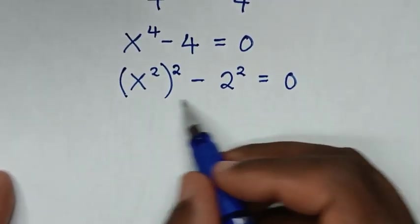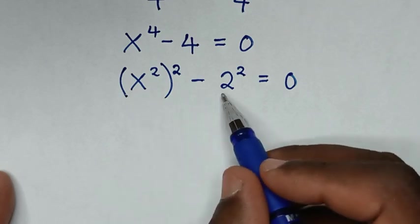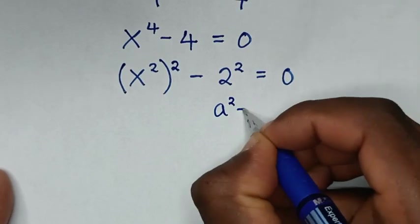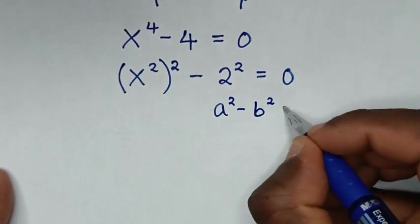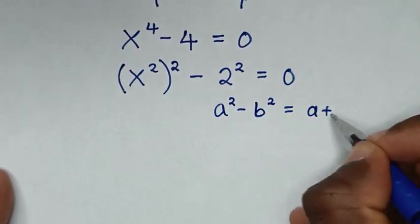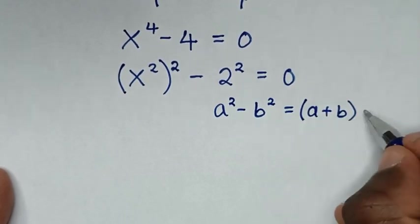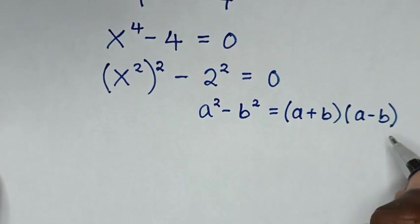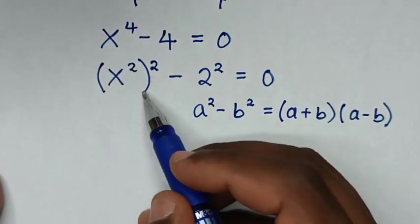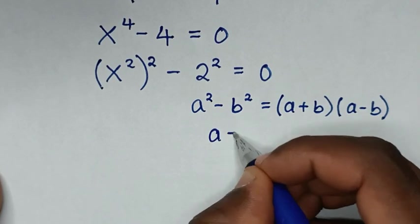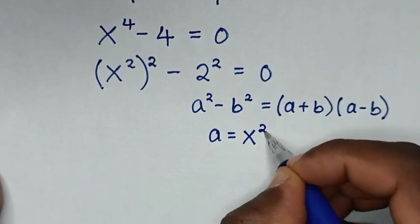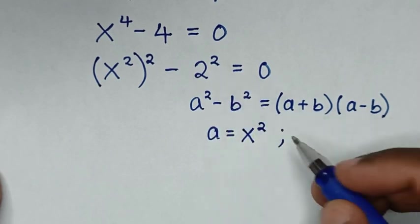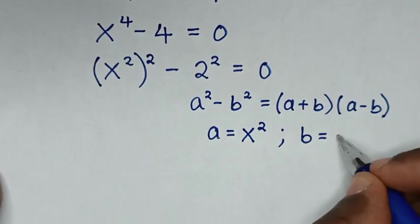From here, the left side is in the form of a perfect square, so we will apply the difference of squares rule: a² minus b² is equal to (a + b)(a − b). When we compare a² with (x²)², then a is equal to x². And when we compare b² with 2², then b is equal to 2.